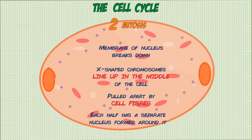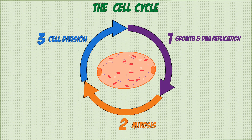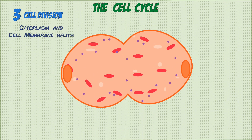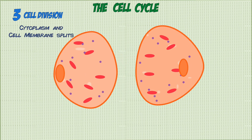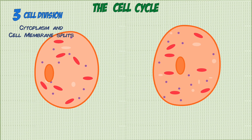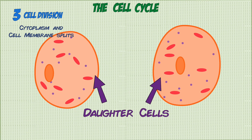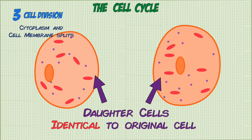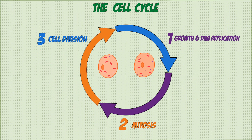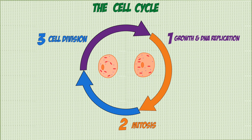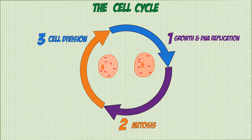The final stage is cell division, where the cytoplasm and the cell membrane of the cell divide and each new nucleus goes to a different cell. These form the final daughter cells which are identical to the cell that you started off with. This cycle can then keep repeating every time a cell needs to reproduce.